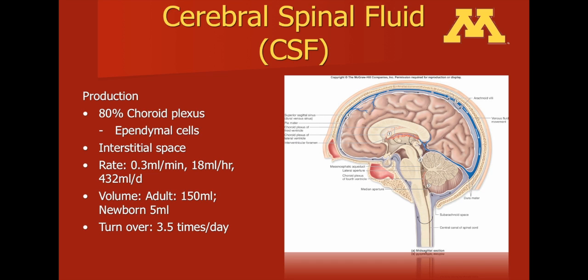80% of cerebrospinal fluid is produced by the choroid plexus, specifically by the ependymal cells. It's produced at a rate of approximately 0.3 milliliters per minute, or 18 milliliters per hour, or 432 milliliters per day. An adult produces approximately 150 milliliters per day and a newborn 5 milliliters, and this turns over 3.5 times per day.